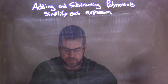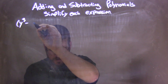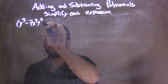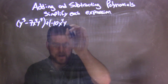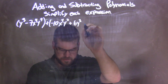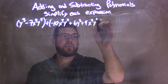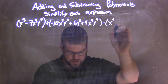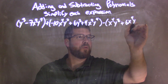So if I was given this polynomial: y to the third minus 7x to the fourth y to the fourth, plus a negative 10x to the fourth y to the third, plus 6y to the third, plus 4x to the fourth y to the fourth, minus x to the fourth y to the third, plus 6x to the fourth y to the fourth.